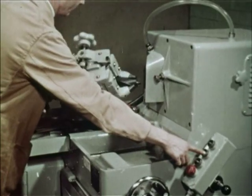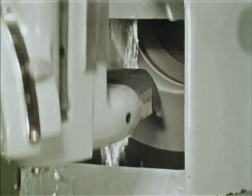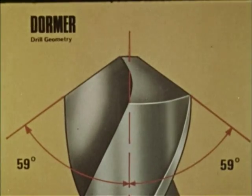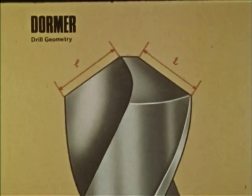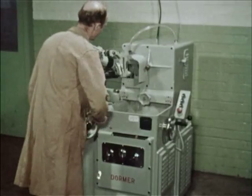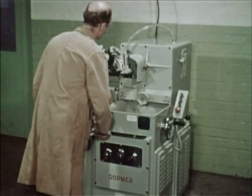A machine-ground point is always more accurate and therefore more efficient than one ground by hand. It is essential that each cutting lip should be at the same angle to the axis of the drill and that they should be of equal length. This means that there will be no difference in relative lip height, and each lip will remove the same amount of material with a balanced cutting action.